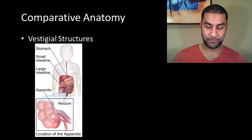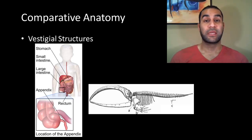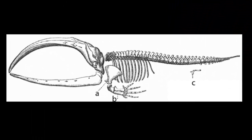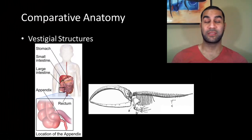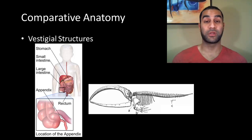Another very good example of a vestigial structure is something found in current species of whales. This is a skeleton of, I believe, a blue whale, and if you look at these species of whales, you notice a lot of skeletal structure that you'd probably expect. But something very unique is what you look at at letter C. Letter C represents a pelvis — it's a vestigial pelvis. The physical composition of that bone is in very strong connection with the pelvis found both in our body and in a lot of other organisms as well.